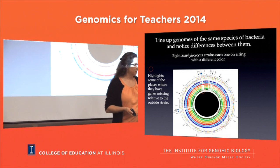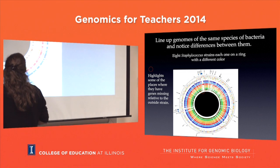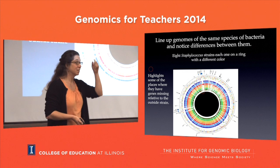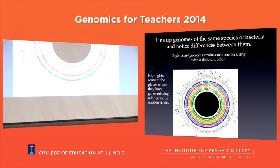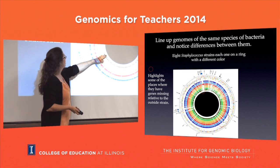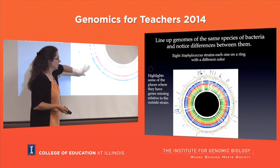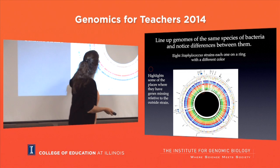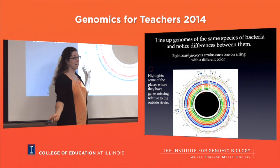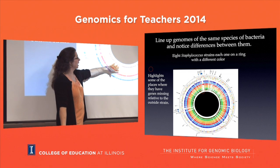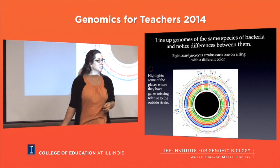A student asks if these are plasmids or just chromosomal DNA. Great question - one of the things we find is that plasmids are moving around. The map is templated on one reference strain on the outside. The point is that there are islands of genes - they're called genomic islands - that are present in some strains but not others.